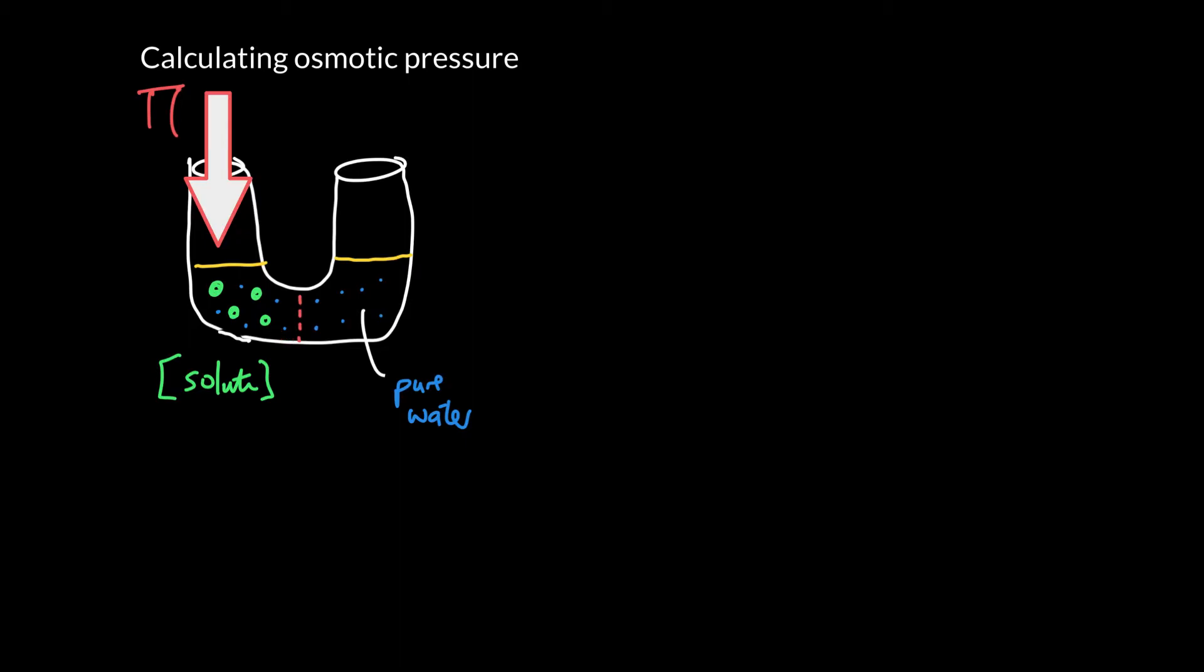So we know that osmosis will occur to move and shift water from the right to the left. But if we apply this pressure here, which we call the osmotic pressure, we can prevent that flow.